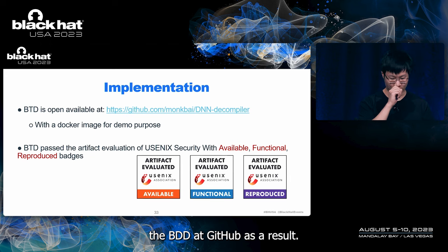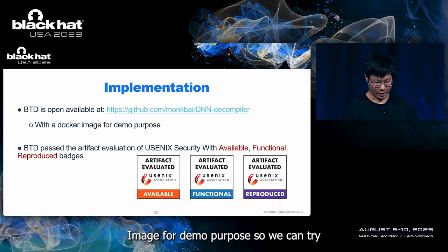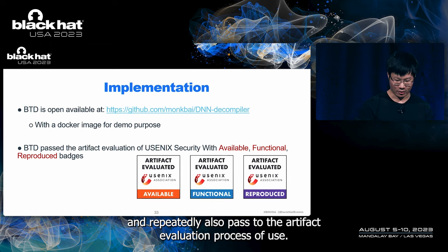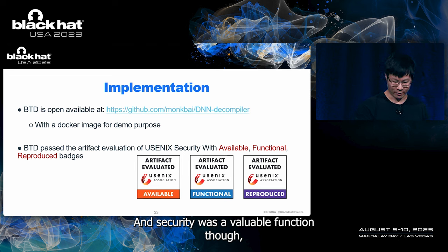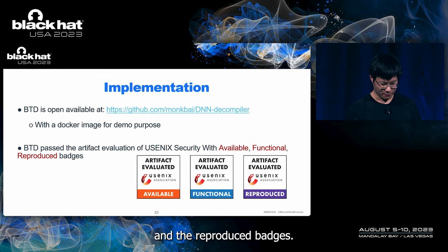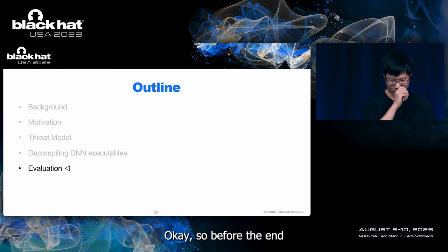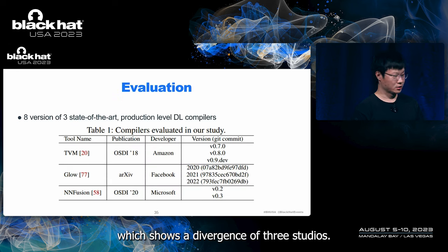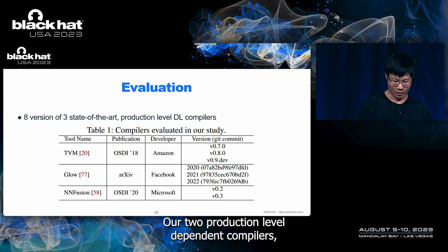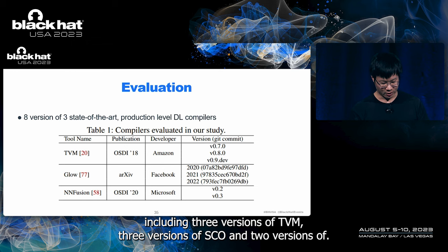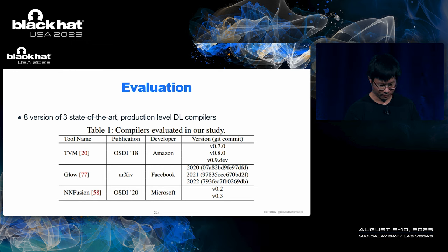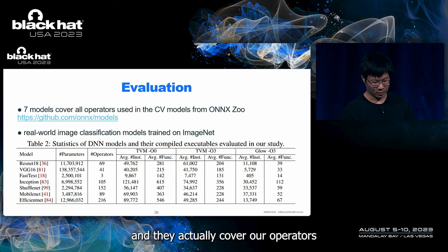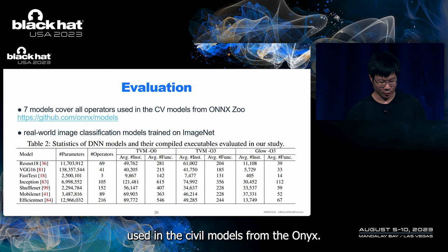We released BTD on GitHub with a Docker image for demo purposes, so experiments can be run with only one command. BTD also passed the artifact evaluation process of USENIX Security with available, functional, and reproduced badges. For evaluation, we chose eight versions of three state-of-the-art production-level deep learning compilers — three versions of TVM, three versions of GLOW, and two versions of NNFusion. We also chose seven models, six of which are image classification models covering all operators used in CNN models from the ONNX Zoo.